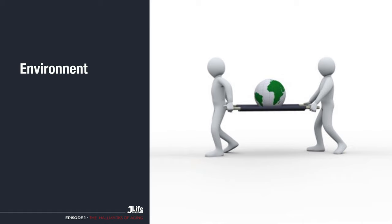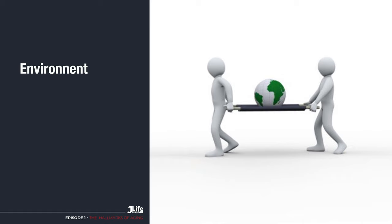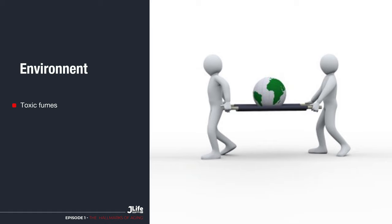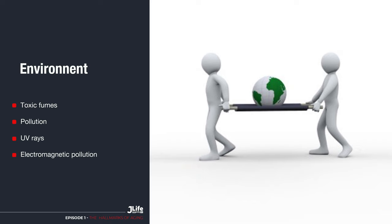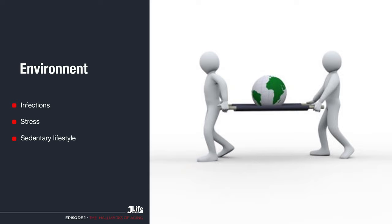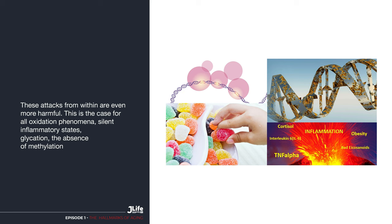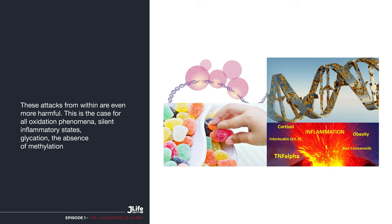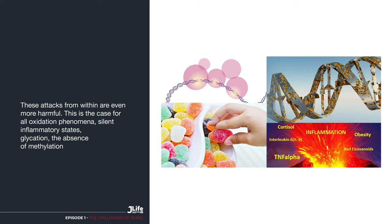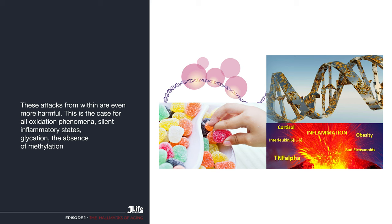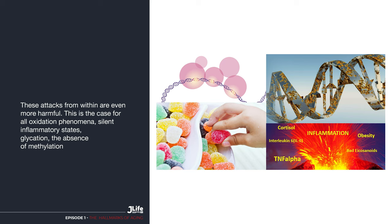Where do these constant attacks come from? First of all, they come from the outside environment: toxic fumes — and of course those of cigarettes — all types of pollution, UV rays, electromagnetic pollution, infection, but also stress, a sedentary lifestyle, or poor nutrition. These attacks also come from within, and they are even more deleterious. They include all the phenomena of oxidation, the silent inflammatory state, and glycation — that is to say, the excess of sugar that freezes our food proteins. There is also the absence of methylation, which is a chemical reaction essential for the activation or repression of genes.